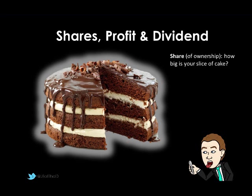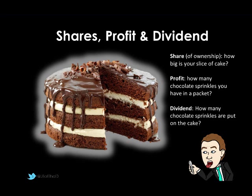So a share is a piece of ownership of a business. Profit is what's on top of our cake. If we put sprinkles on our chocolate cake, that would represent how many we've decided to put on — so for our profit, that would be how much dividend we've actually decided to give away. So our chocolate sprinkles are our profit. The business may decide to hold on to some of its profit, much in the same way as a baker might use chocolate sprinkles on part of a cake, but not all of it.